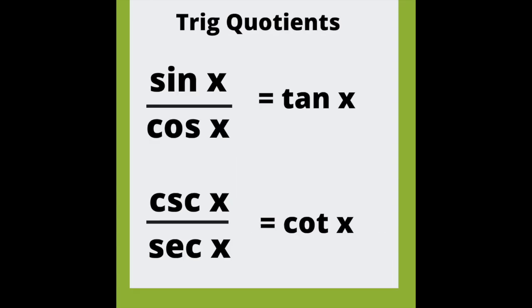Divide sine by cosine, you get tan. With the reciprocal it's the same plan: cosecant over secant equals cotangent.